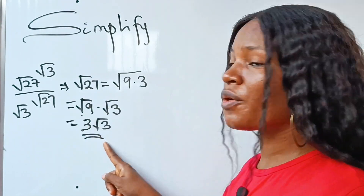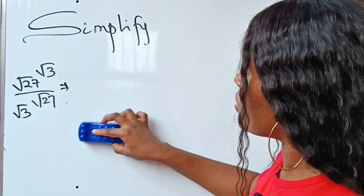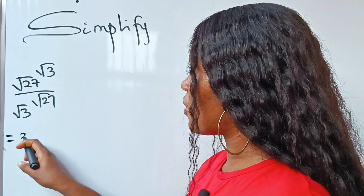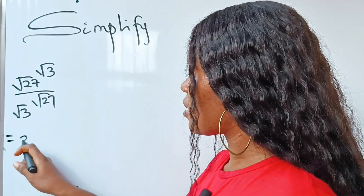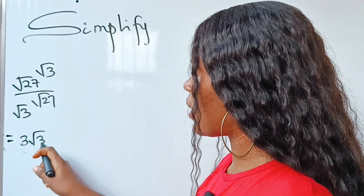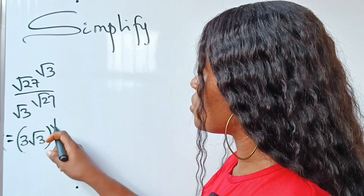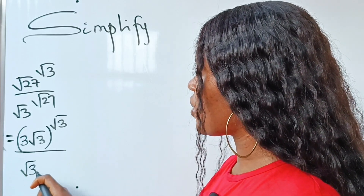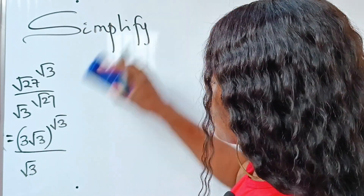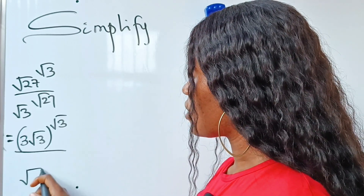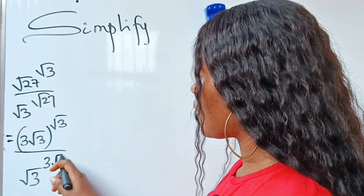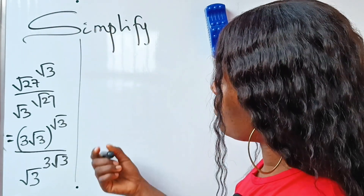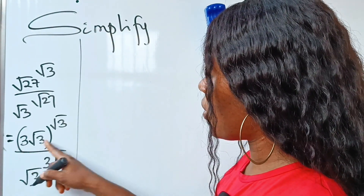So I'm going to replace root 27 with 3 root 3. This gives us 3 root 3 raised to the power of root 3, divided by root 3 raised to the power of 3 root 3.